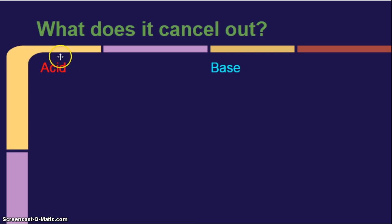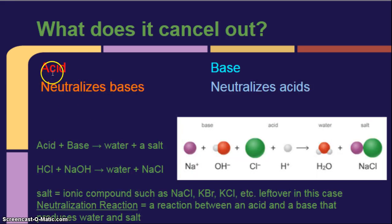What does it cancel out? Draw another line. In other words, if I put acids into a solution, what is it going to cancel? Acids neutralize or cancel out bases. Bases neutralize or cancel out acids. So, an acid plus a base yields water plus a salt. Salt is any ionic compound, such as NaCl, like the table salt you eat, but it can be other salts, too. It can be KBr, KCl, etc. In other words, it's the leftovers.